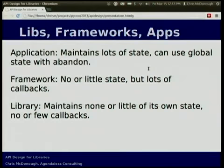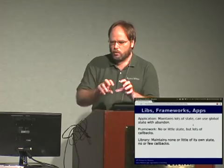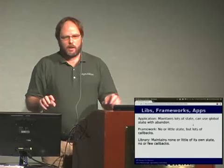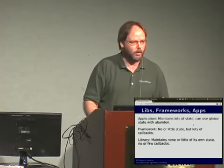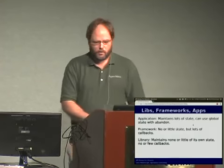I'm going to talk about three kinds of things. There are three different kinds of things that have strangers using code that you might write. One is an application — something that can use global state with abandon. A database is global state; module scope stuff is global state. A framework is a step down from that — usually frameworks have no state, but they call into code via callbacks. A library is neither of those things — it's something that you call to have it do something on your behalf, usually maintaining little or no state.